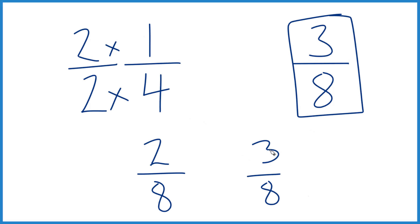And if you want to figure out how much greater, three minus two is one. So three-eighths is one-eighth larger than one-fourth.